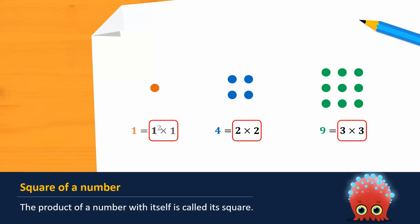So 1 is the square of 1, 4 is the square of 2, and 9 is the square of 3. A square is denoted by writing a small 2 at the top right of a number.